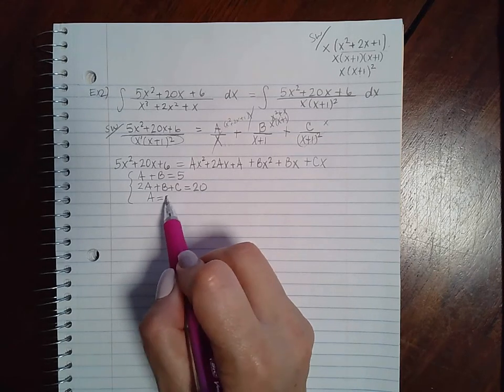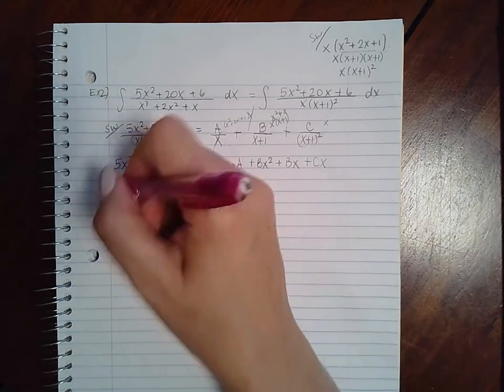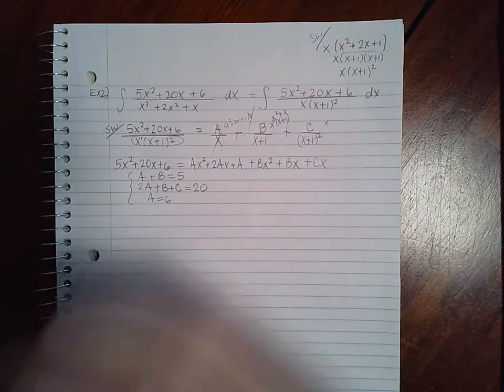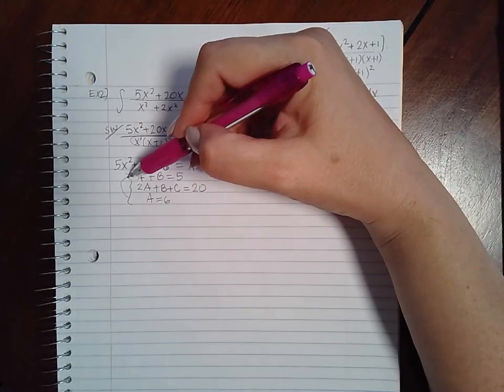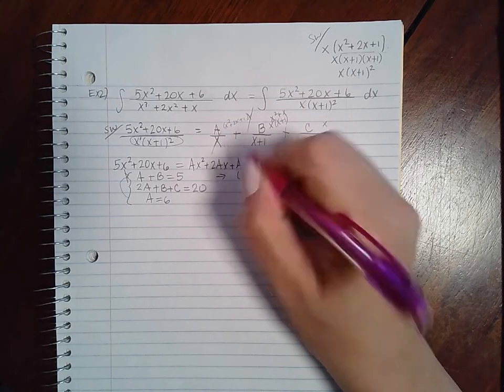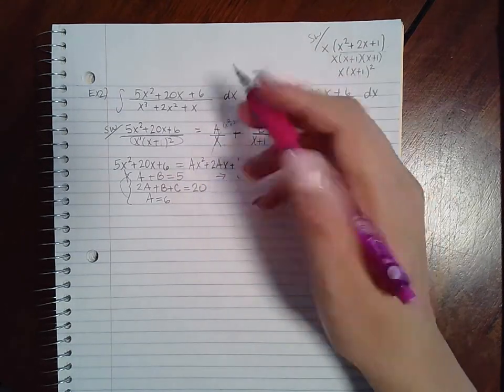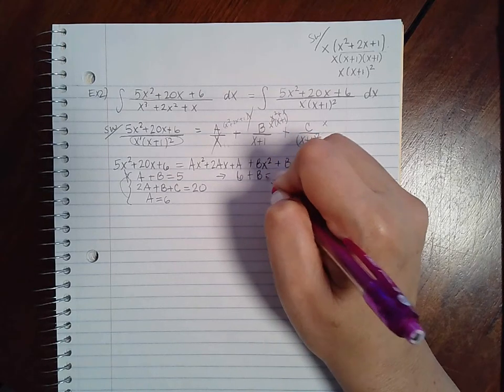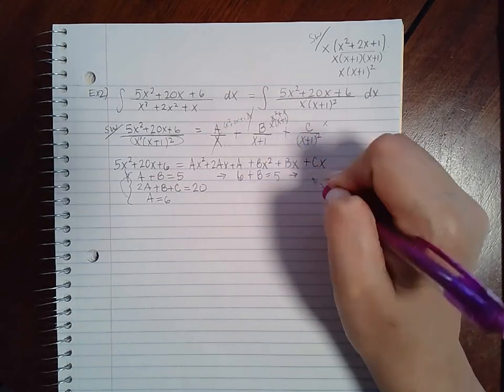And then for my constants, I have A equals 6. So I can already have one variable. I can plug that into the top equation and find B. So what would B have to be if it was 6 plus B equals 5? Well, that means B would have to equal negative 1.